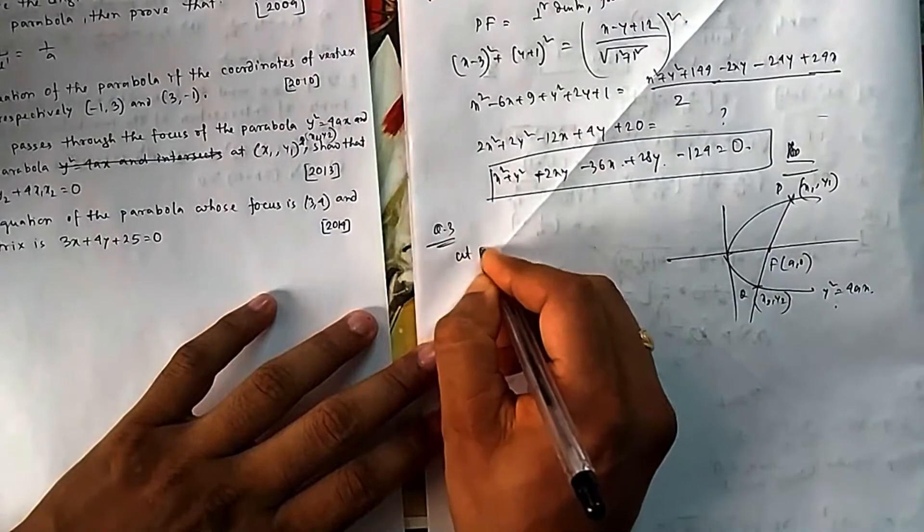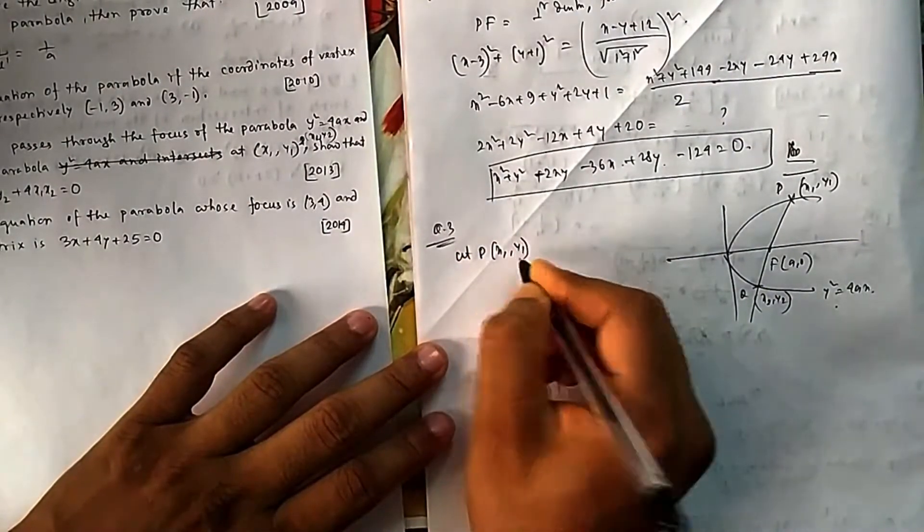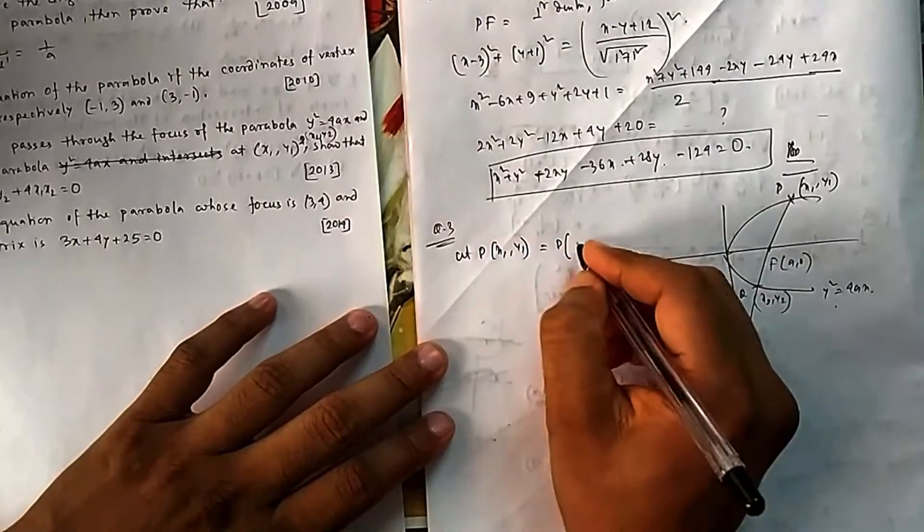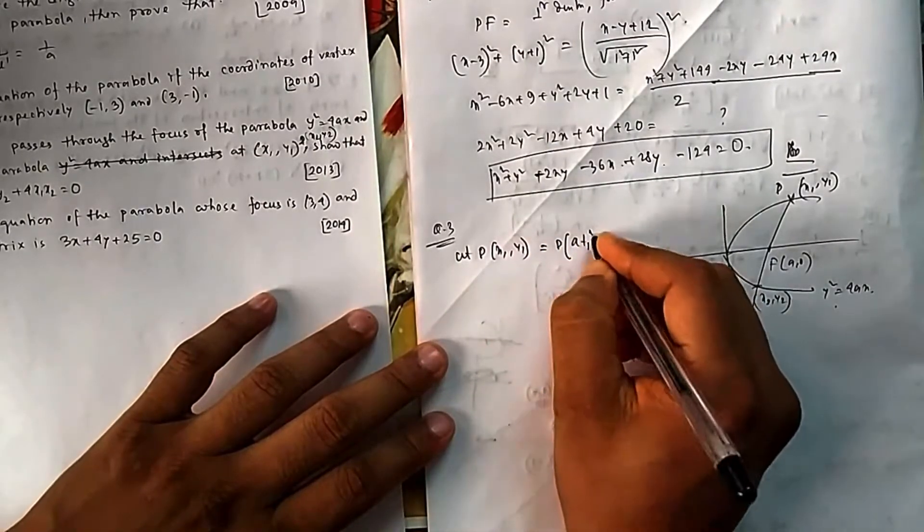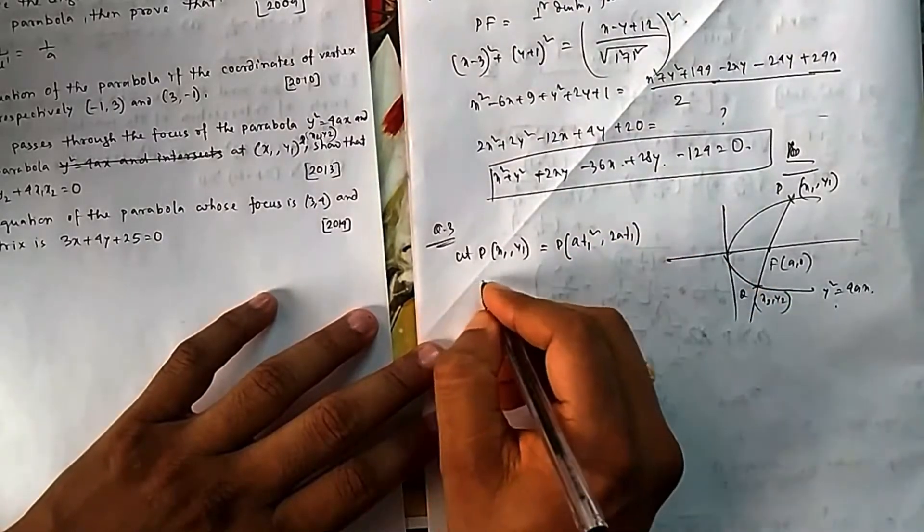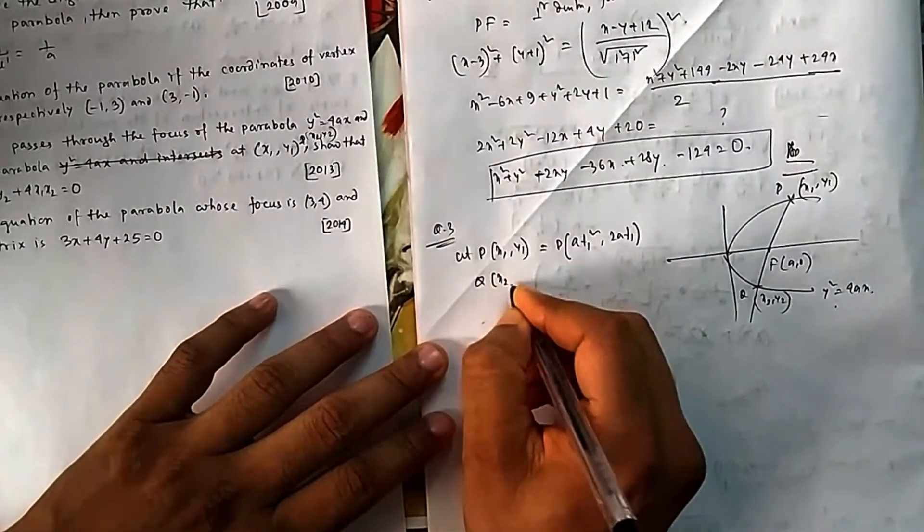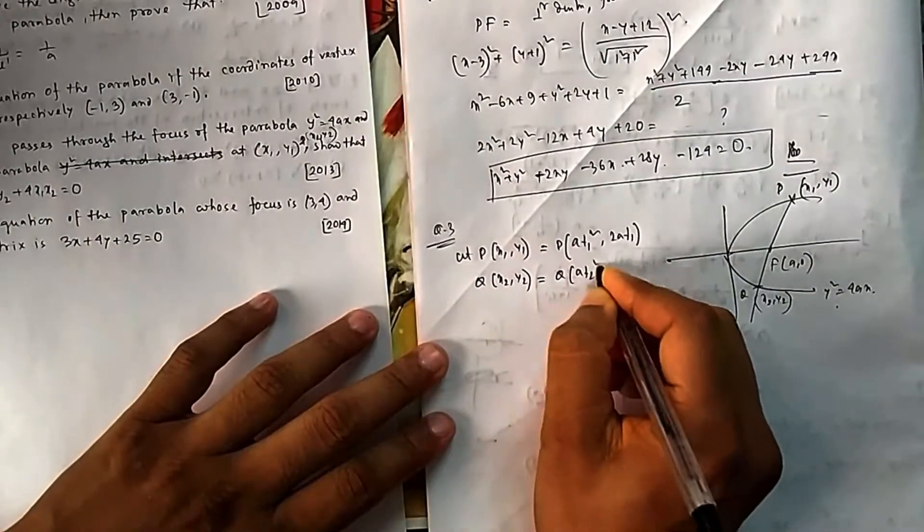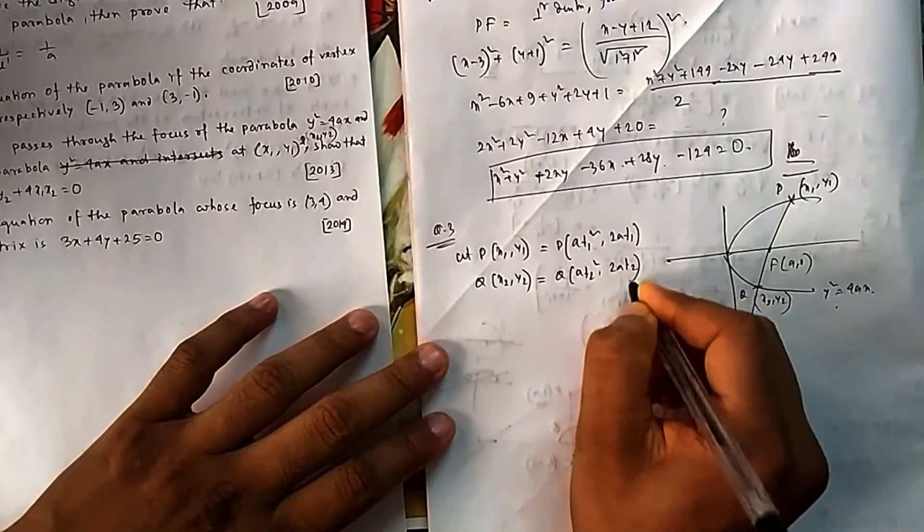So let P, which is your (x₁, y₁) we have given, is equal to - in place of (x₁, y₁) we will write it in t₁ format: (at₁², 2at₁) because it is easy to write in parametric format. And Q, which is your (x₂, y₂), will be taken as (at₂², 2at₂). It's easy, we have seen.